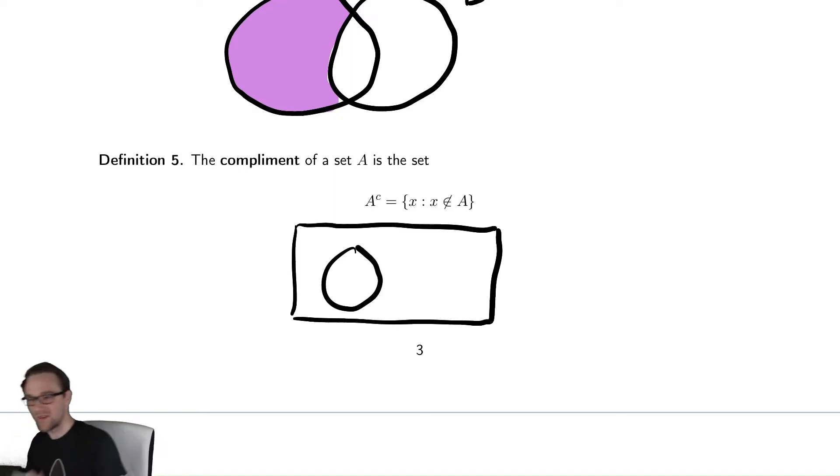There is, in some sense, the universe of everything that exists. Here is A. The complement is all the stuff that is not in A. So, this is everything that is not in the circle.